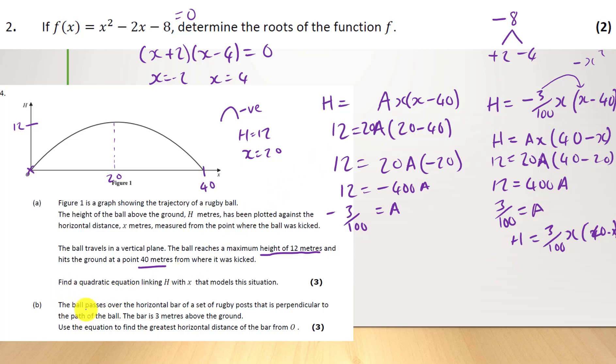Now, let's do part B. The ball passes over the horizontal bar of a set of rugby posts that is perpendicular to the path of the ball. The bar is 3 meters above the ground. So what it's saying is, imagine there's a bar here. Or this is going to do it like that. So that's the rugby goal. That's going to be at 3 meters. Use the equation to find the greatest horizontal distance of the bar from O. So we just set h equal to 3. So we're going to depend on what formula we use. I'm going to use this one I've written here. So 3 equals, and it will work with either because they're the same thing.